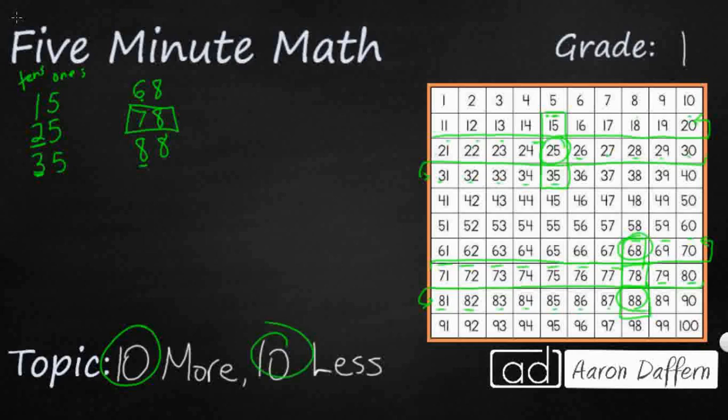I wonder if we could do it without our 100 chart. Let's see. Let's start with a number like this, 93. So if I follow the same pattern, all I need to do is keep my ones digit the same and change my tens digit.